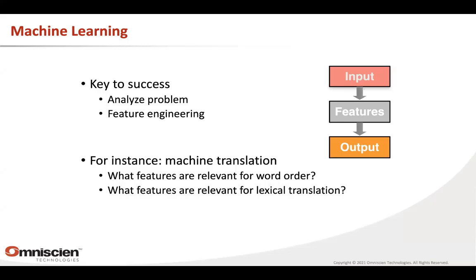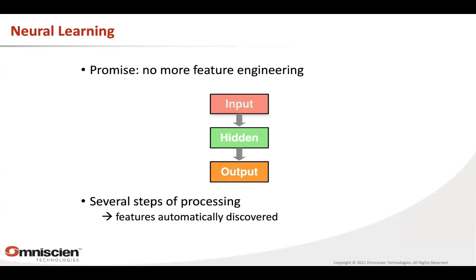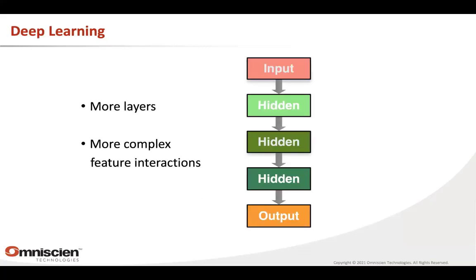In machine translation, big questions were: what is relevant for word order? What is relevant for lexical translation? With deep learning, we no longer have to do manual feature engineering. The promise is a flexible, general learning apparatus that in its hidden layers automatically discovers all the properties that are relevant. Deep learning is the same idea, except you have more hidden processing layers. Think of it like a computer program — if you can only write three lines of code there's limited capability, but with tens or hundreds of lines you can implement many more algorithms. In the same way, deep learning uses multiple layers to find complex relationships and interactions between features.